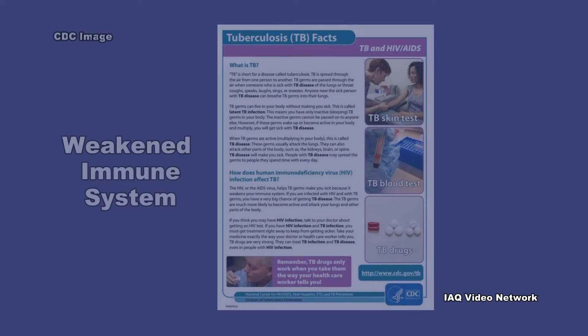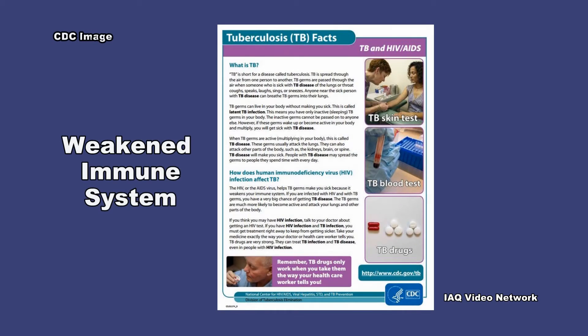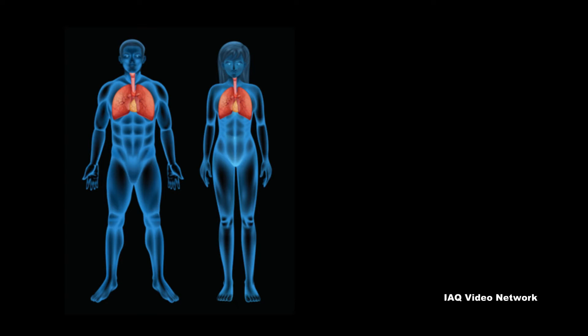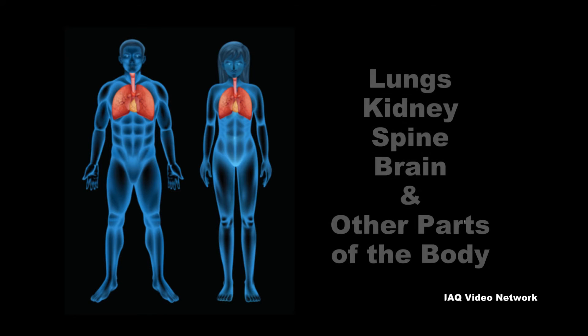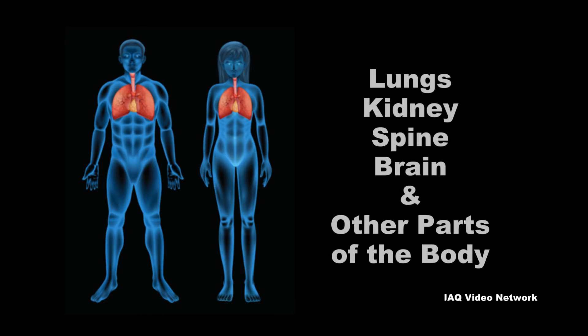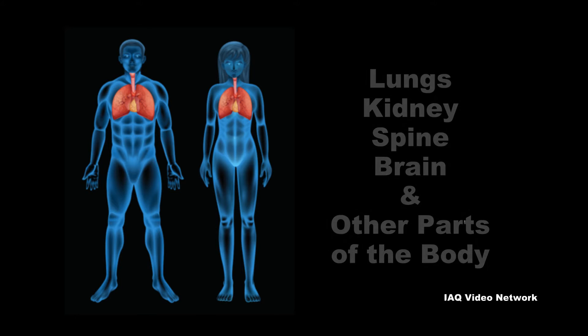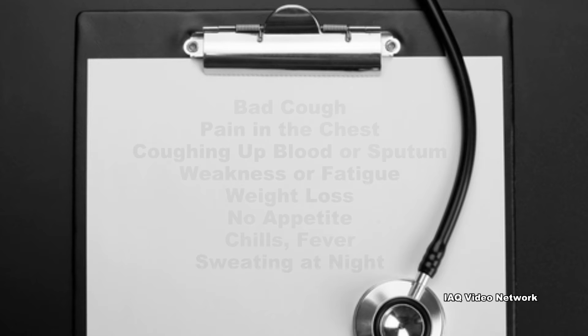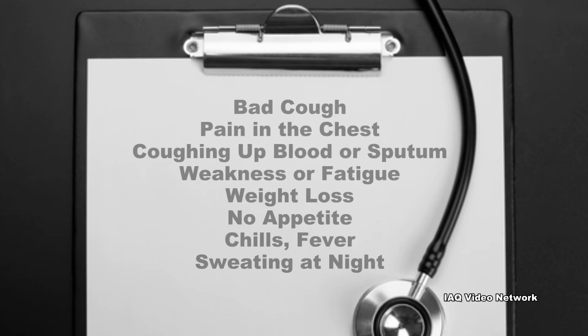This is why TB can be so devastating to people with a weakened immune system, including people with HIV. The bacteria usually attack the lungs, but they can attack any part of the body, such as the kidney, spine, and brain.